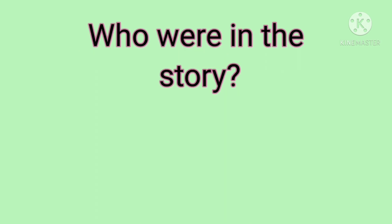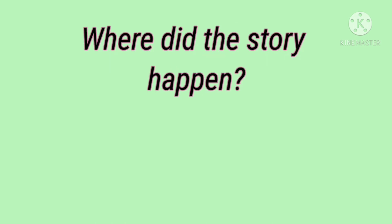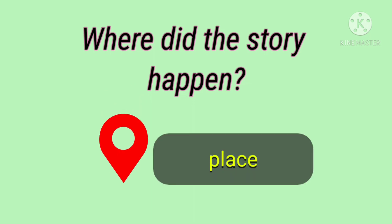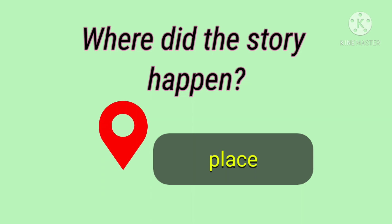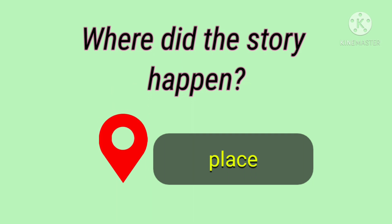The next question: Who were in the story? You have to say about the characters. The answer will be: the careless boy, a man, and a girl. The next question: Where did the story happen? That means you have to say about the place. After observing the pictures, we can say that the incident happened on the road.